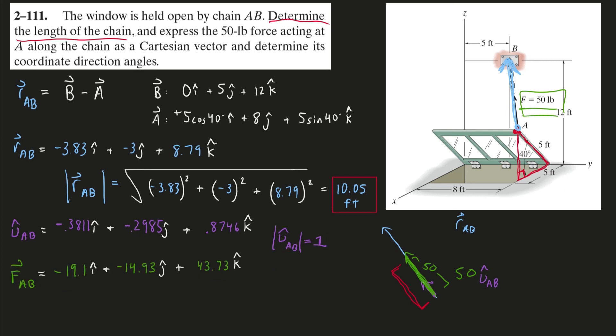So if I do that, I'll get these force components, i, j, and k, and of course the magnitude, the length of this force vector we already knew, that's the 50 pounds.